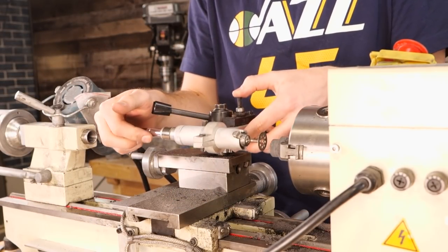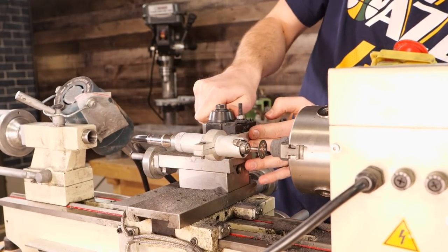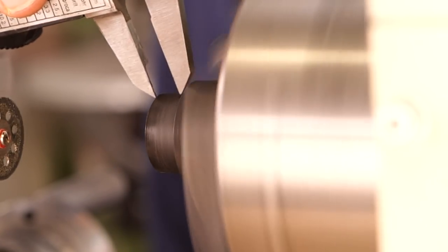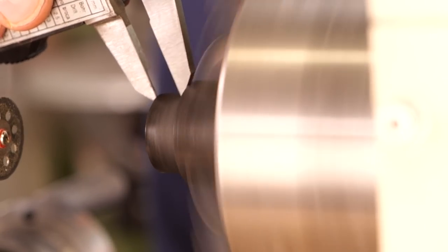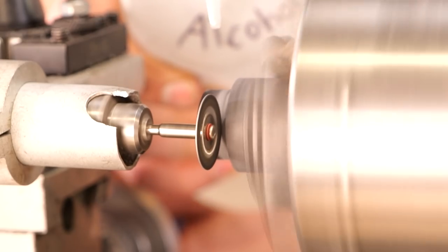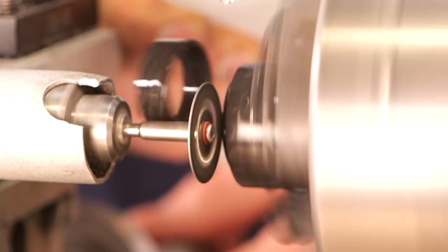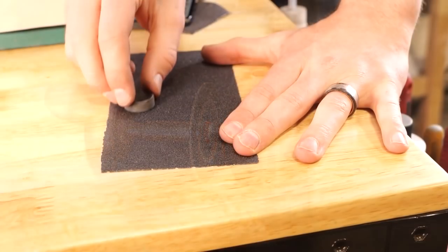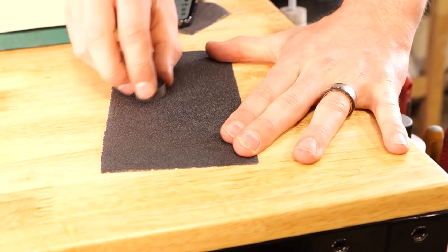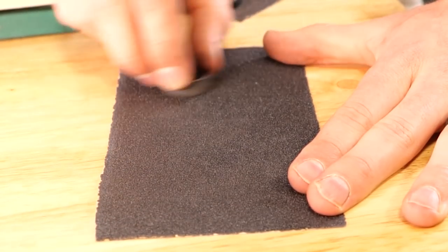Once we've got the ring blank cut to size, we need to go ahead and separate it from the rest of the piece. So to do that, I'm going to use a diamond cutoff wheel. This will leave us with really nice unfrayed edges. Now after some quick sanding, we're left with a liner that's ready to go.